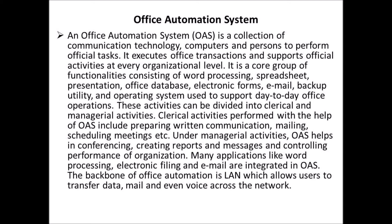These activities can be divided into clerical and managerial activities. Clerical activities performed with the help of office automation system include preparing written communication, mailing, scheduling meetings, etc. Under managerial activities, office automation system helps in conferencing, creating reports and messages, and controlling the performance of the organization.